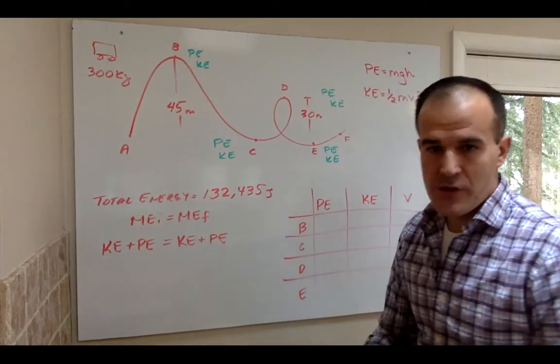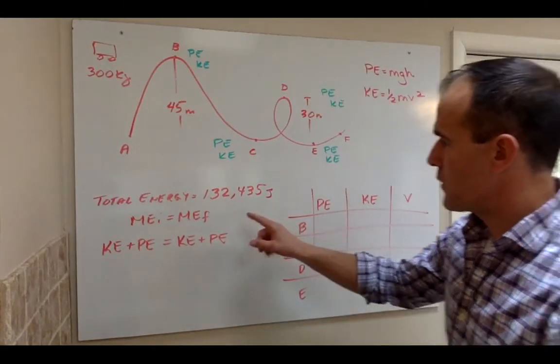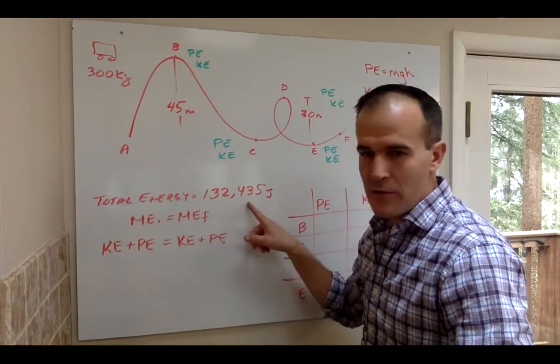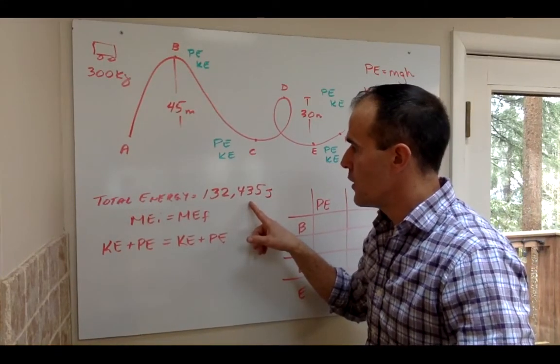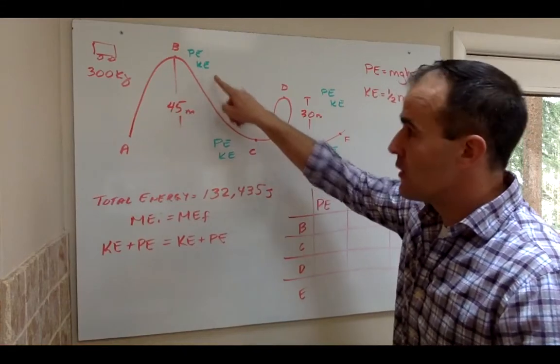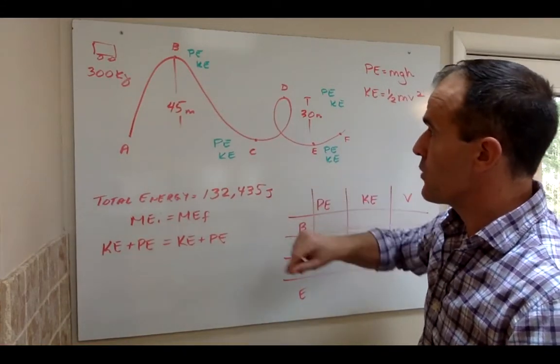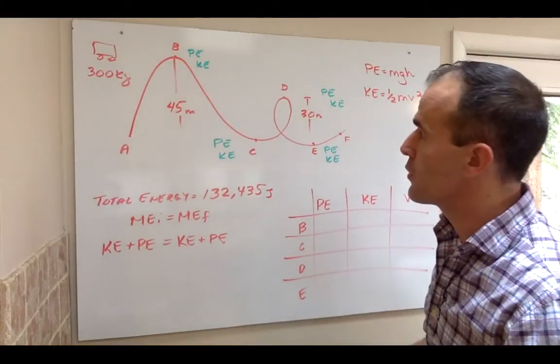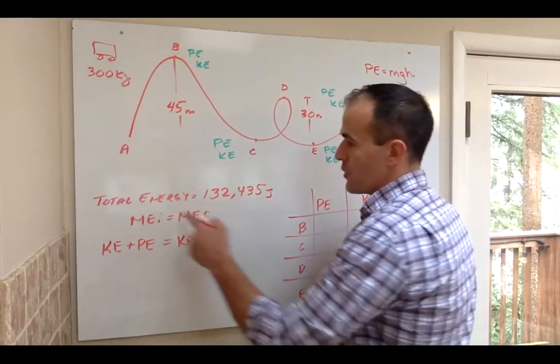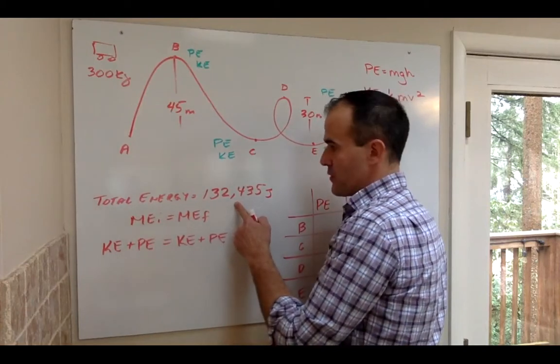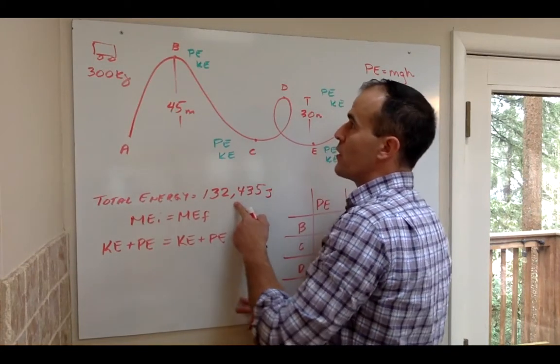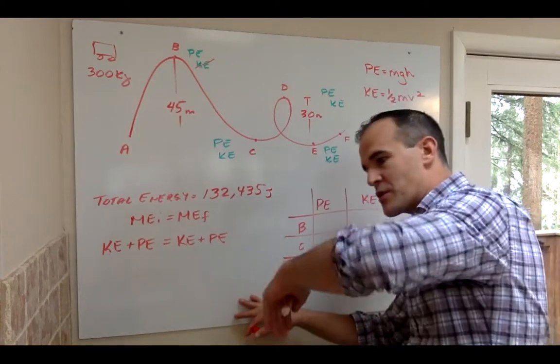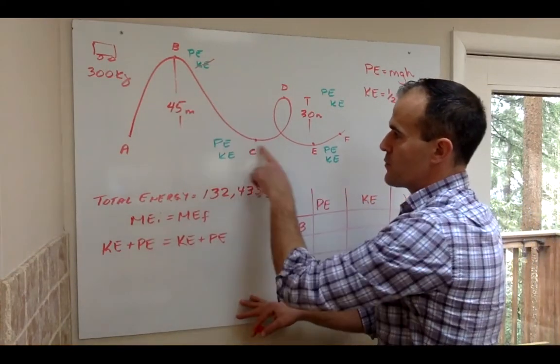Okay, so let's start filling some stuff in. So once you figure out the work done to get up to position B, you know the total energy now for the entire rest of the rollercoaster. At position B, you're really all potential. We always start these where at the highest point you're not moving and then you begin to move through the entire rollercoaster. So up here, your total energy is 132,435 joules, but you have no kinetic energy. You're really just at rest, ready to get started.